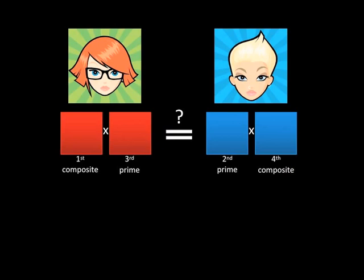The red team starts by choosing a composite number. For starters, we're going to make it 12 or under. Let's say they choose 2. The red team then chooses a prime number — let's say 7.